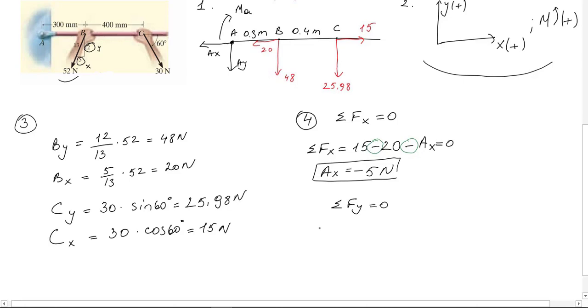I know also that sum of total forces in y direction must be zero. From left to right we have 25.98 newtons minus 48 newtons and also minus Ay. From this equation I find that Ay is minus 73.98 newtons.